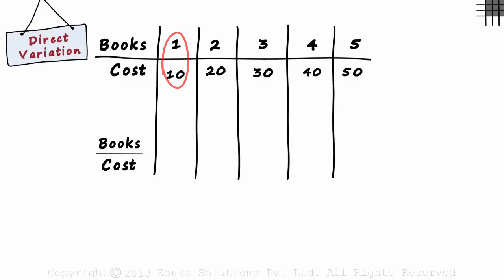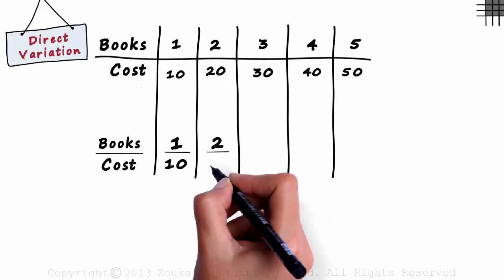In the first case, the number of books is 1 and the cost is 10. Hence the ratio is 1 by 10. In the second case, the number of books is 2 and the total cost is 20. Hence the ratio is 2 by 20.